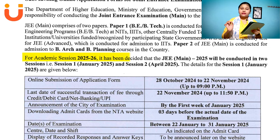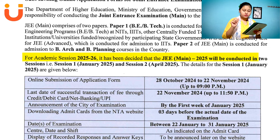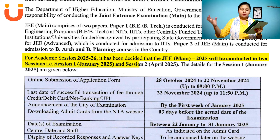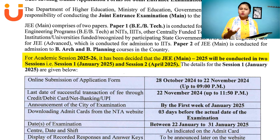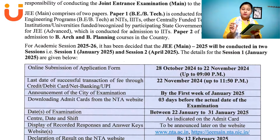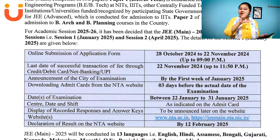Let's have a look. For academic session 2025-26, it has been decided that JMains 2025 will be conducted in two sessions — Session 1 in January 2025 and Session 2 in April 2025. As usual, JMains is in two sessions, one January and one April. No changes as such.